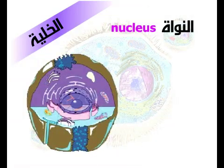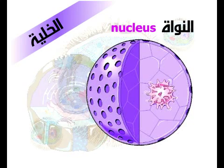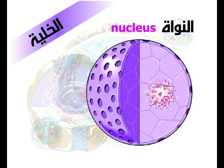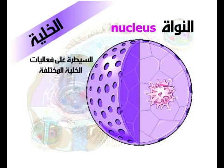النواة. النواة هي أكبر عضية متميزة داخل الخلية، وهي ذات شكل كروي غالباً لكنها قد تأخذ أشكالاً أخرى، لها دور كبير في نقل الصفات الوراثية وفي نشاط الخلية الأيضي. تفقد الخلايا قدرتها على الحياة عند فقدها للنواة، ما عدا كريات الدم الحمراء والأنابيب المنخلية التي تكون عديمة النواة. وهي مركزية الموقع عادةً.